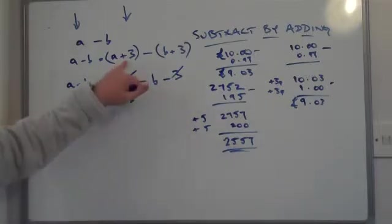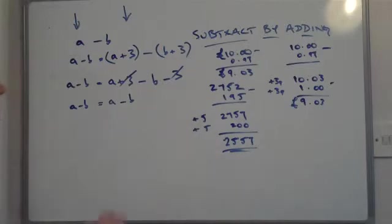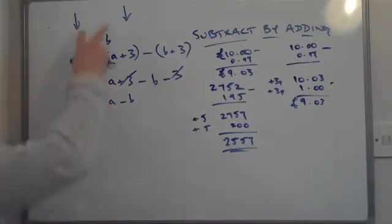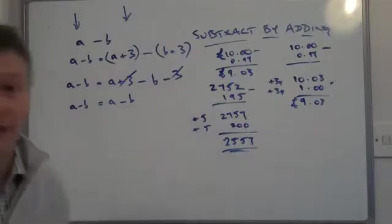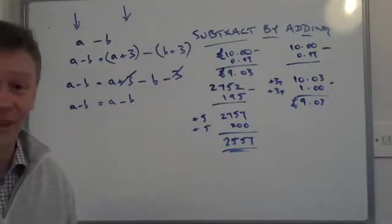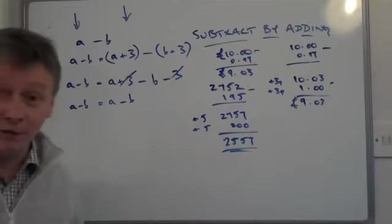So actually by adding 3 to both sides, I can now algebraically prove that A minus B is the same as A minus B on both sides. I hope that's helpful to you.